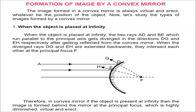Image formation by convex mirror. The image formed by a convex mirror is always virtual and erect, whatever the position of the object — wherever you place it, the image will always be virtual and erect.